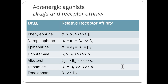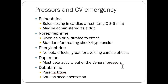Fenoldopam is a dopamine agonist that doesn't have real effects on beta or alpha receptors and works mostly in the kidneys — it can help with fluid removal and hypertensive crisis, working as the opposite of a presser by increasing mesenteric blood flow to the kidneys. It's rarely used. Different pressers have different utilities in cardiovascular emergencies, and we'll go through all of this in more detail next summer.